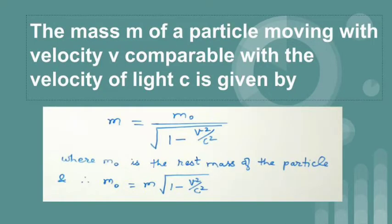The mass m of a particle moving with velocity v comparable with the velocity of light c is given by m is equal to m0 divided by under root 1 minus v square by c square where m0 is the rest mass of the particle and therefore, m0 is equal to m times under root 1 minus v square by c square.